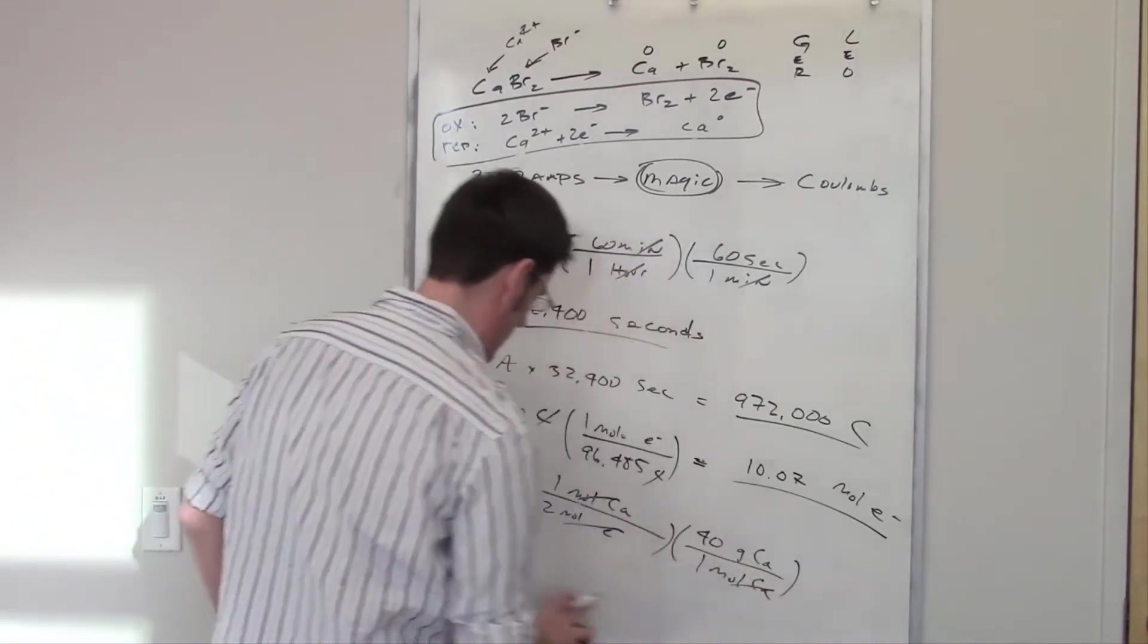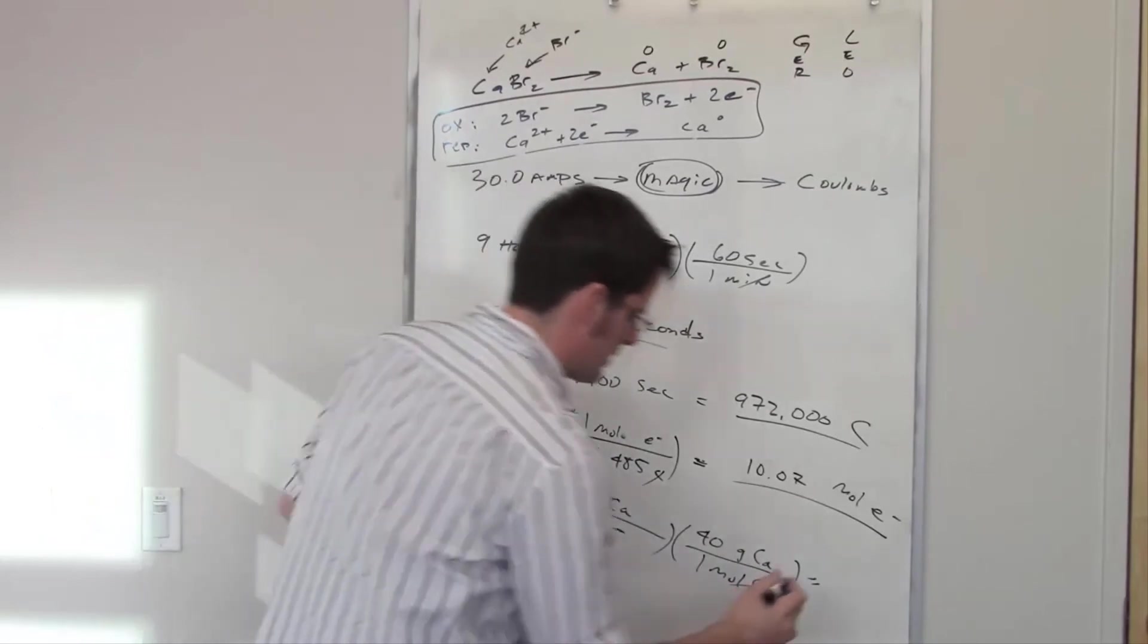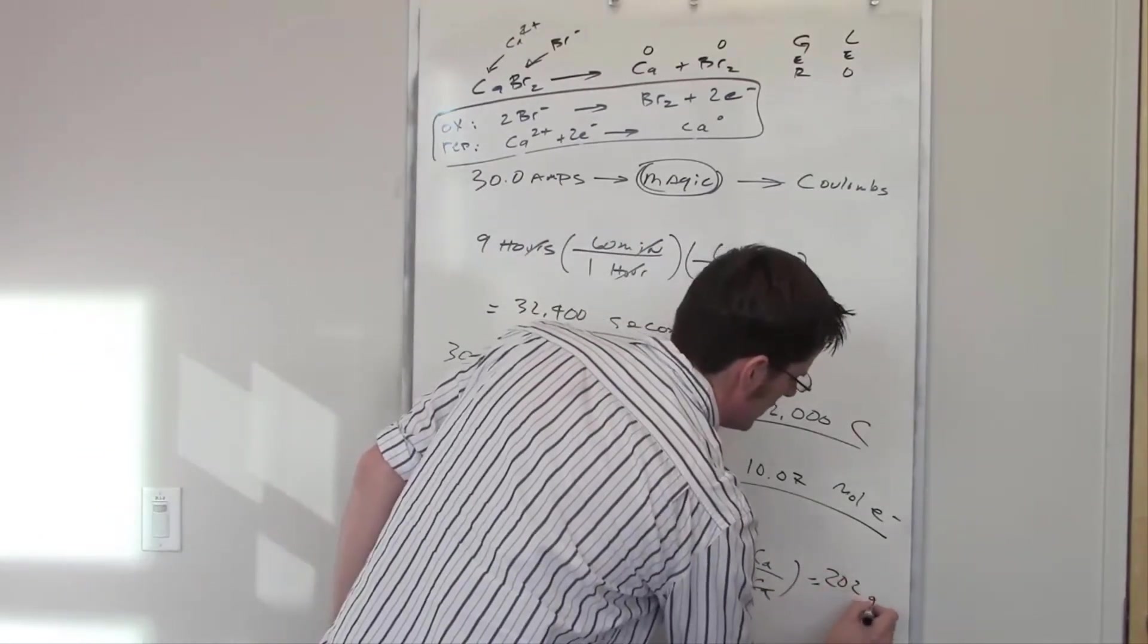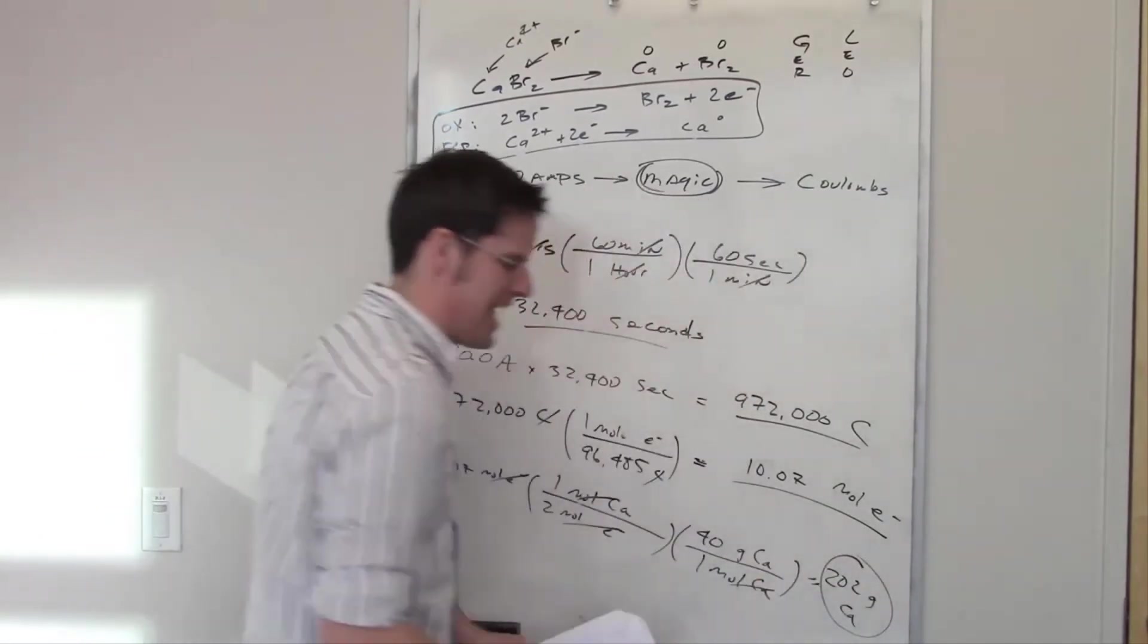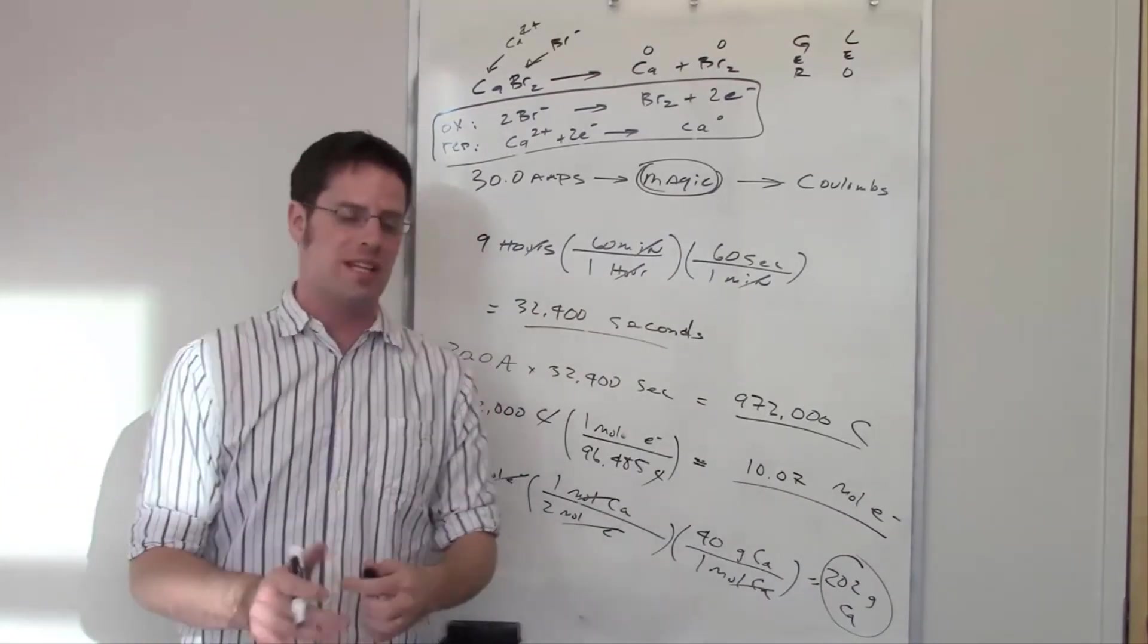So I'm going to write grams of calcium on top, one mole of calcium in the denominator. How many grams of calcium are there in one mole of calcium? I looked that up on the periodic table—it's about 40. So moles of calcium cancel each other out, moles of electrons cancel each other out, and I'm left with the total number of grams of calcium.